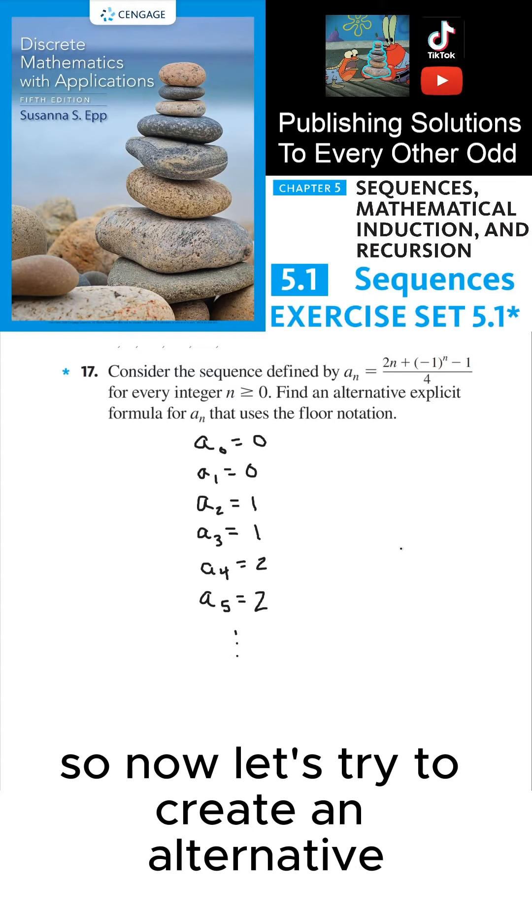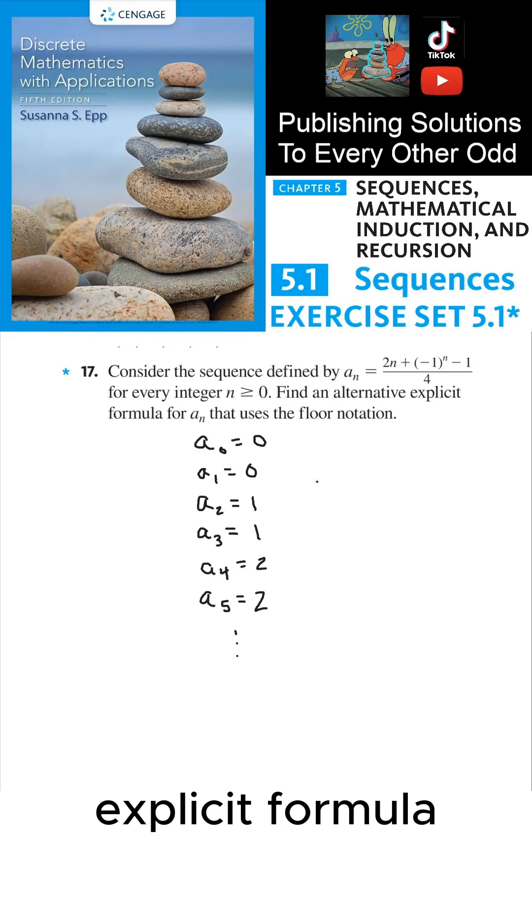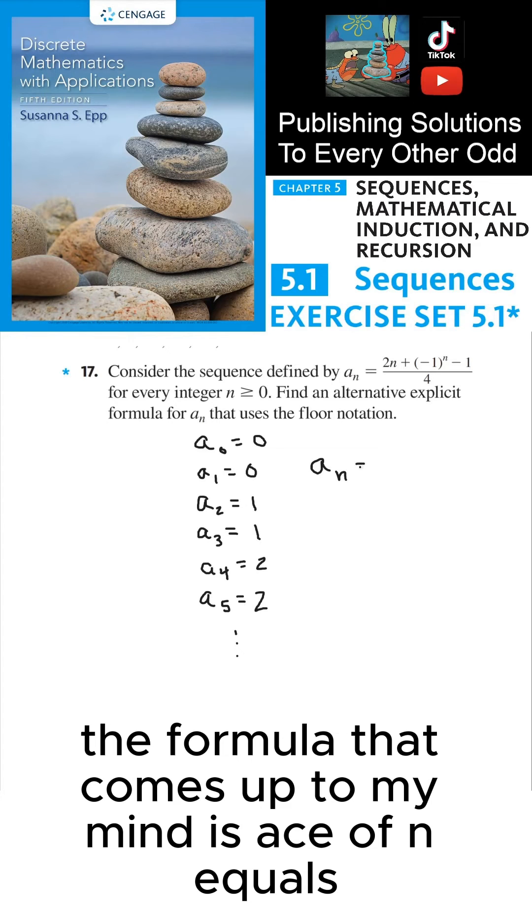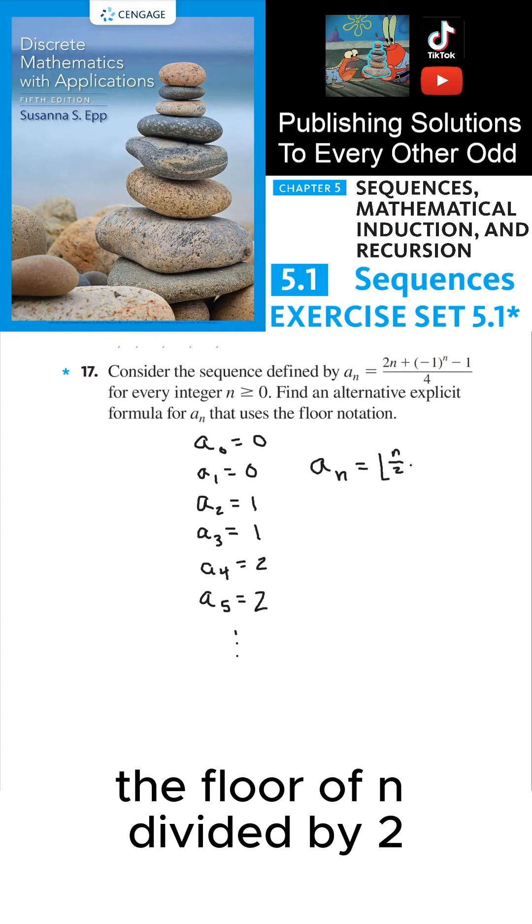So now let's try to create an alternative explicit formula. I can already see what I'm going to do here. I want my terms to increment every other term. The formula that comes to mind is a_n equals the floor of n divided by 2.